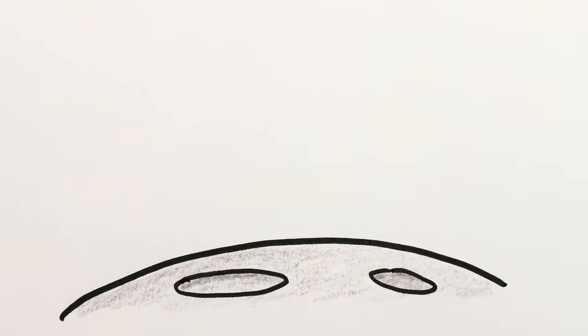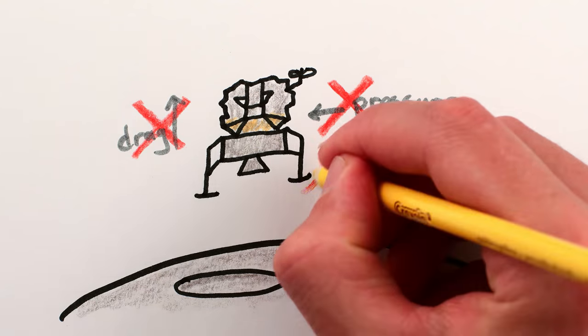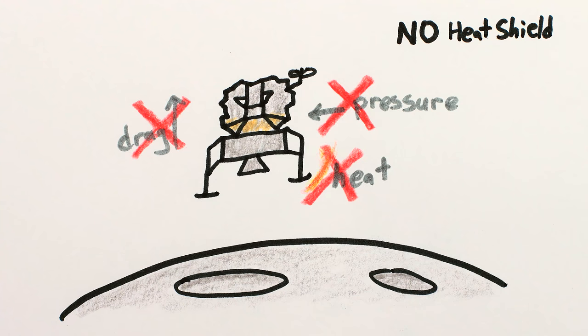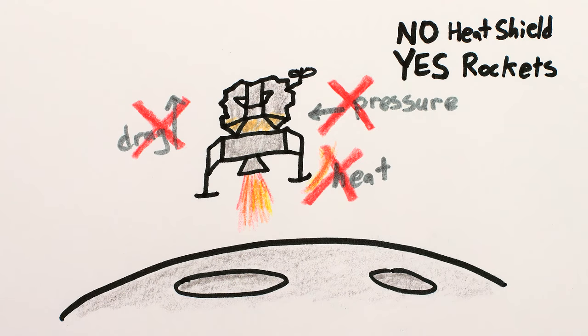On the moon or an asteroid, you can use lightweight spacecraft made essentially out of tinfoil because there's no air to cause drag or pressure or heat. Essentially, you save weight not having heat shields or thick walls, but need to use rockets to land in what's called a powered descent.